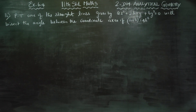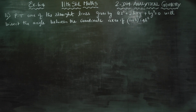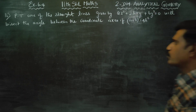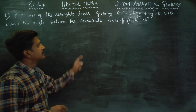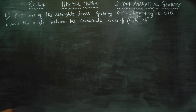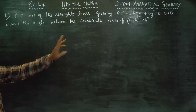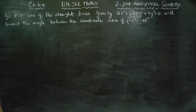Dear Levin Standard students, I am Metru Karnagaran. In exercise number 6.4, prove that one of the straight lines given by Ax² + 2hxy + by² = 0 will bisect the angles between the coordinate axis if (a + b)² = 4h².